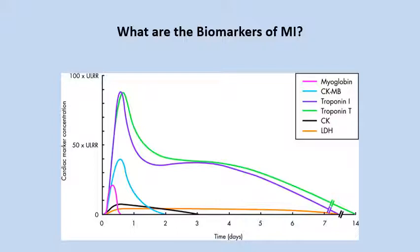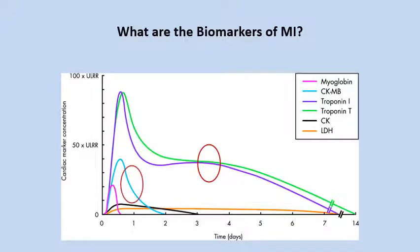Now let's look at the biomarkers of myocardial infarction detectable in plasma. They are myoglobin, creatine kinase MB isoenzyme, cardiac troponin I, cardiac troponin T, total creatine kinase, and lactate dehydrogenase. The most important ones are troponin I, troponin T, and the creatine kinase MB isoenzyme.